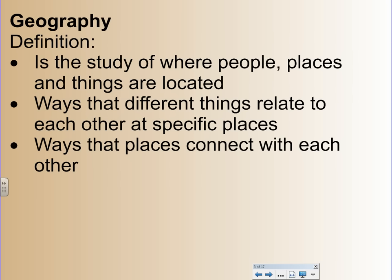Geography — the definition: the study of where people, places, and things are located, the ways that different things relate to each other at specific places, and the ways that places connect with each other. There's more to geography than just maps and where things are. Geography determines a whole lot of stuff.